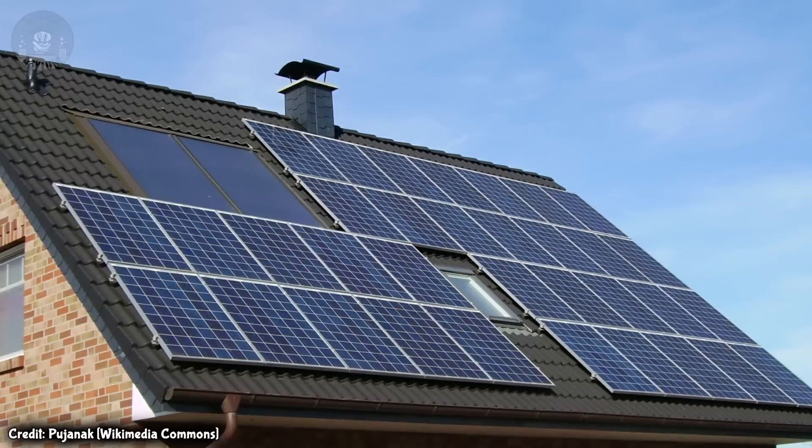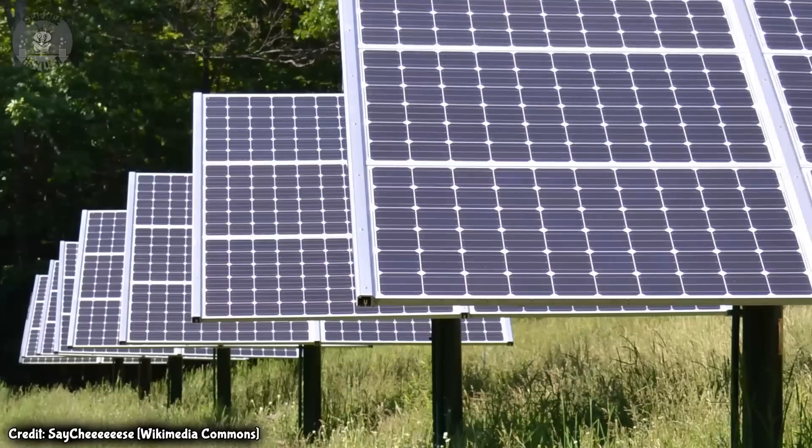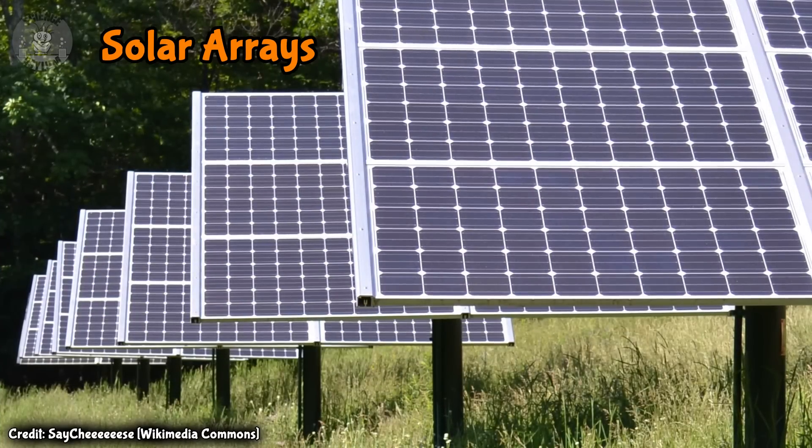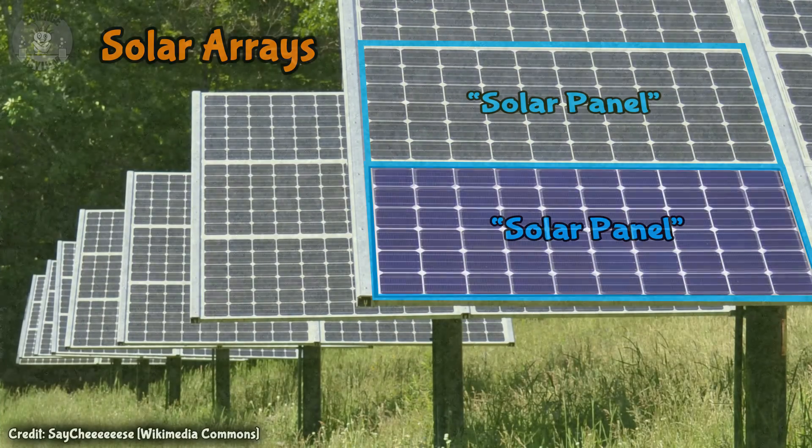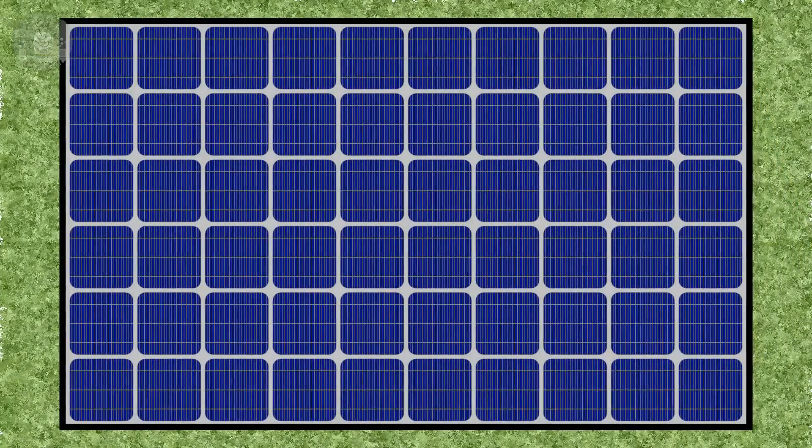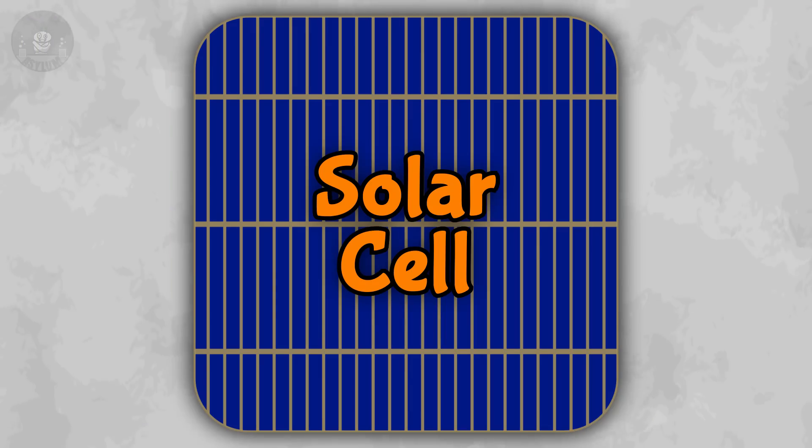First, let's get some lingo out of the way. When I say solar panel, you're probably picturing something like this or maybe even this. But these are called solar arrays. They're collections of solar panels. A single panel or module looks like this. And that panel is made of even smaller parts called solar cells.